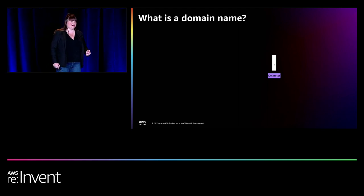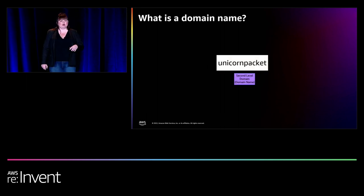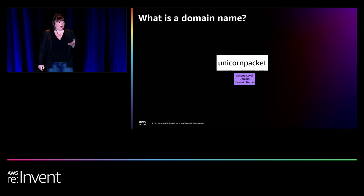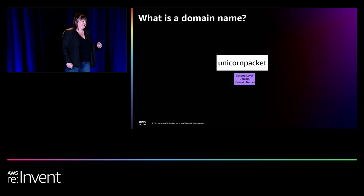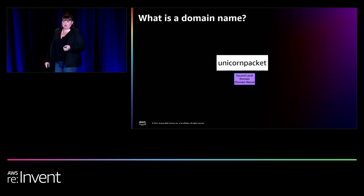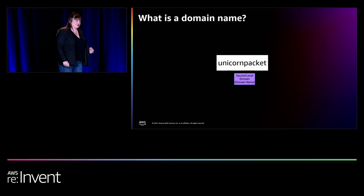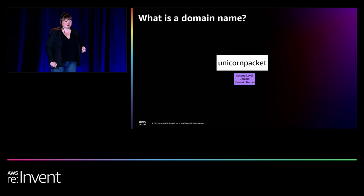The dot is a delimiter — it's used to specify a boundary. Unicornpacket is a second-level domain, sitting directly below the .com top-level domain. Unicornpacket, coupled with the top-level domain .com — so unicornpacket.com — was a purchased domain name, and it was registered with a domain name registrar. A registrar is a company accredited by ICANN, the Internet Corporation for Assigned Names and Numbers, and it processes requests for specific top-level domains.